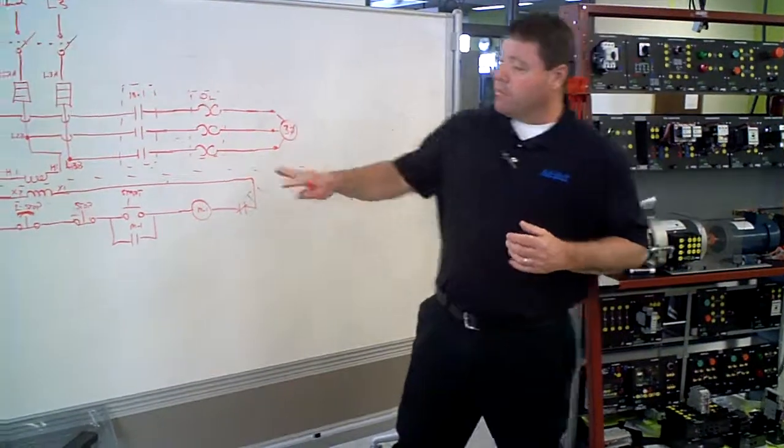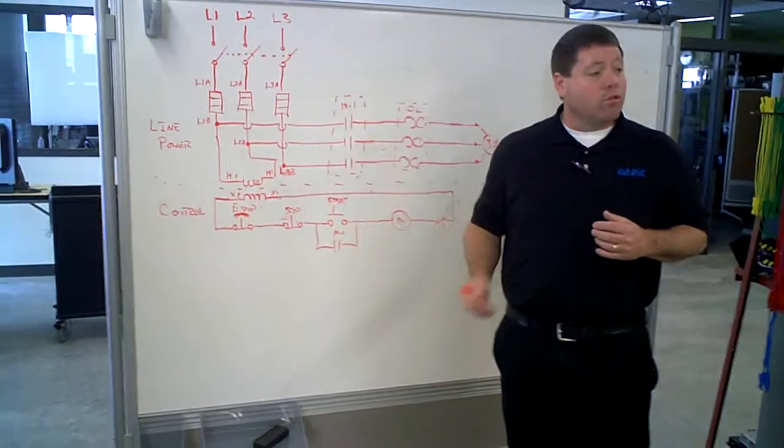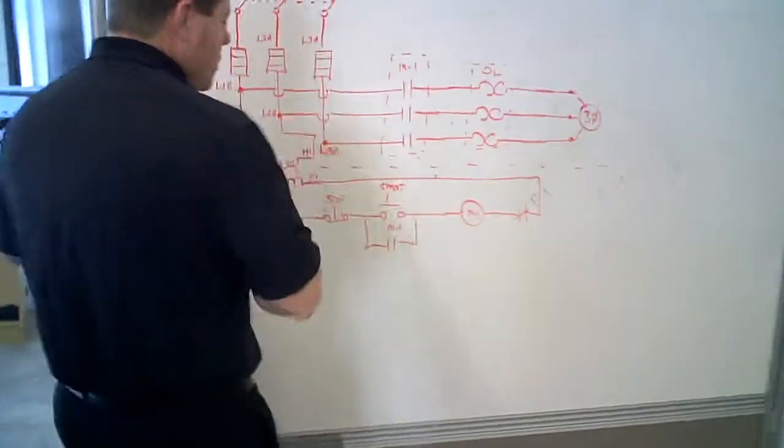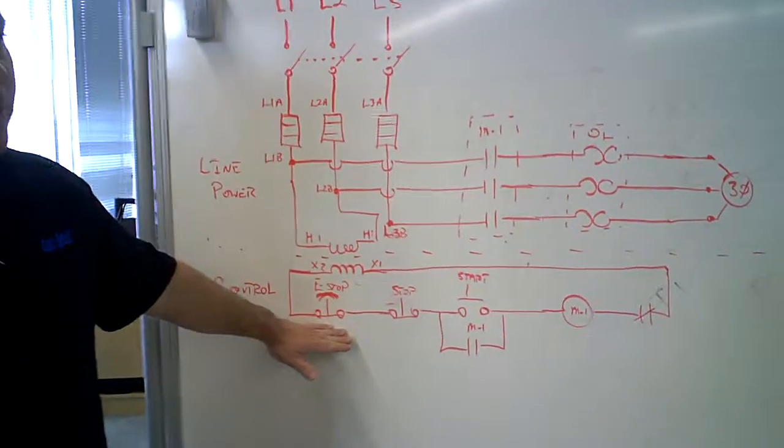So you can take that transformer, put it in there, run 208 to it, and you get 120 out. The power comes out of the transformer, and it goes to both ends. You control the circuit. And in this case, we have an E-stop.